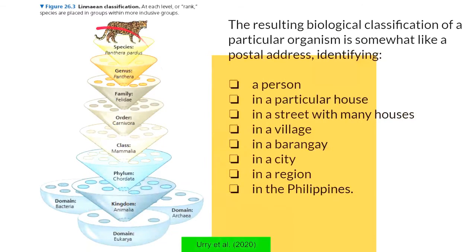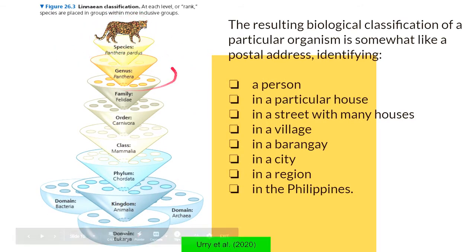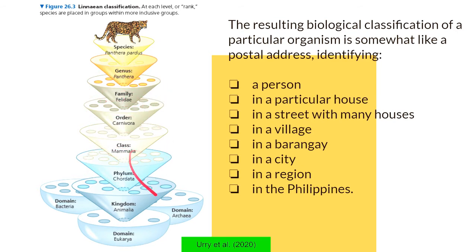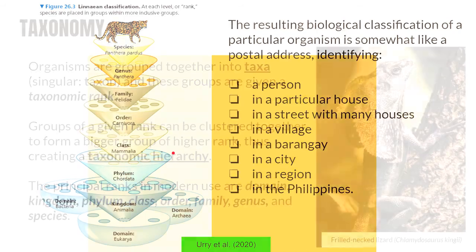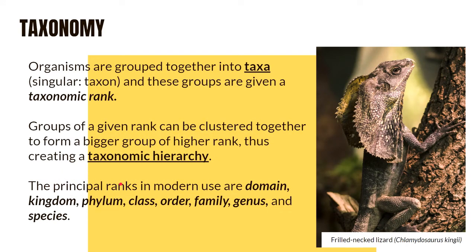This is how a taxonomic hierarchy looks: groups of organisms organized into bigger and bigger groups. The principal ranks in modern use are domain, kingdom, phylum, class, order, family, genus, and species.